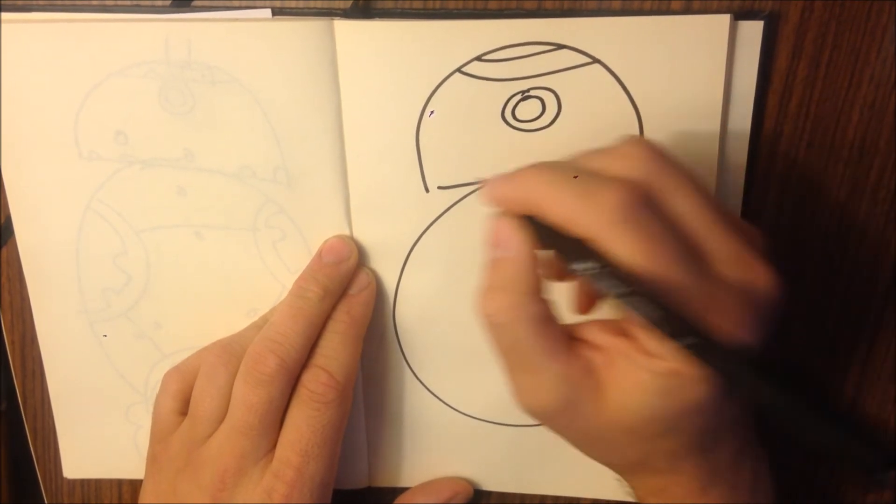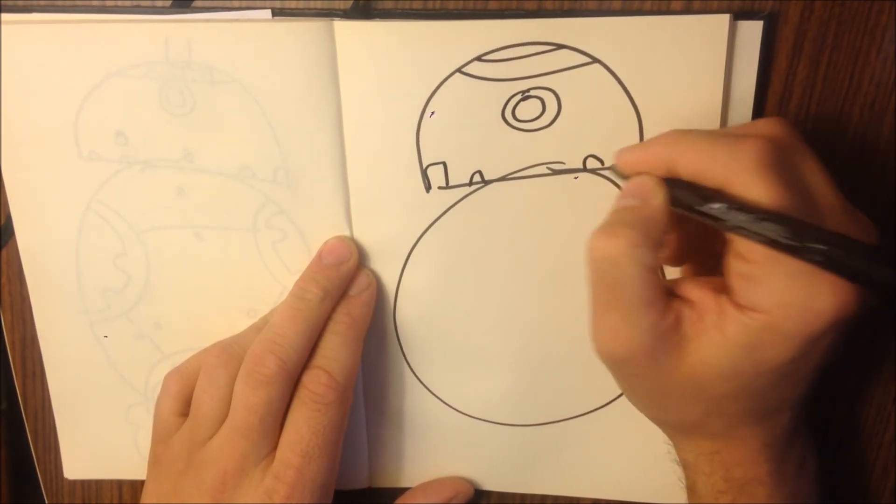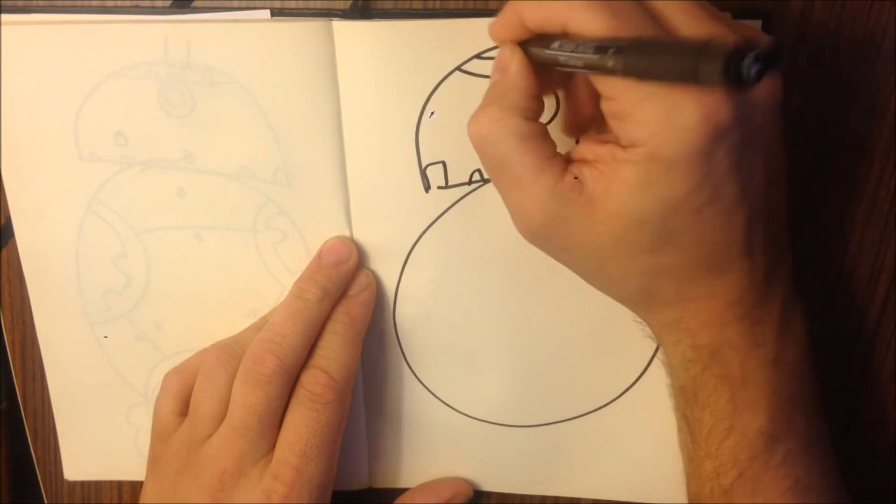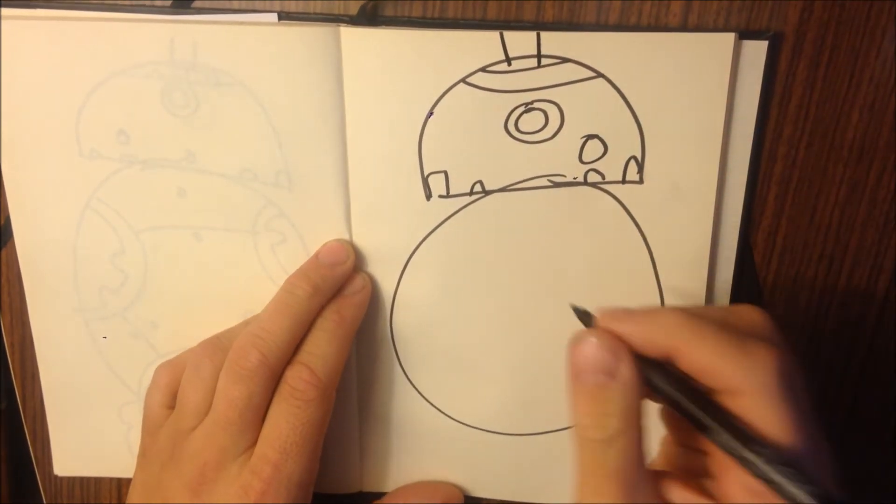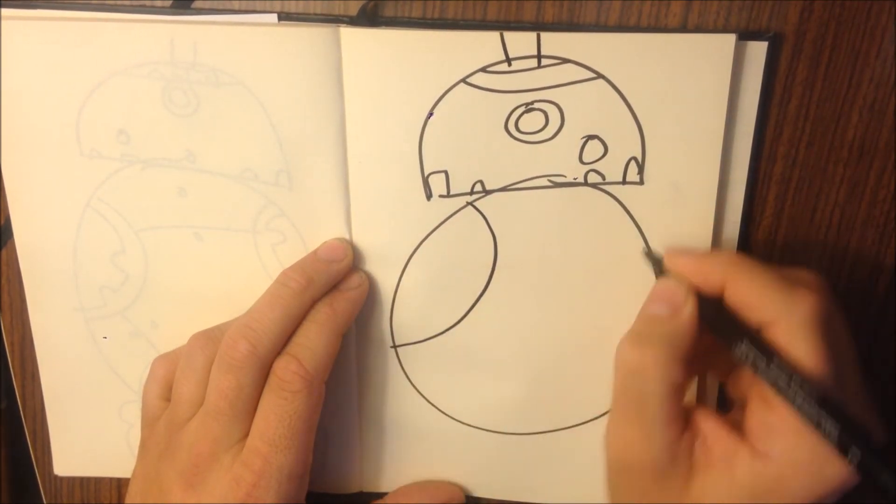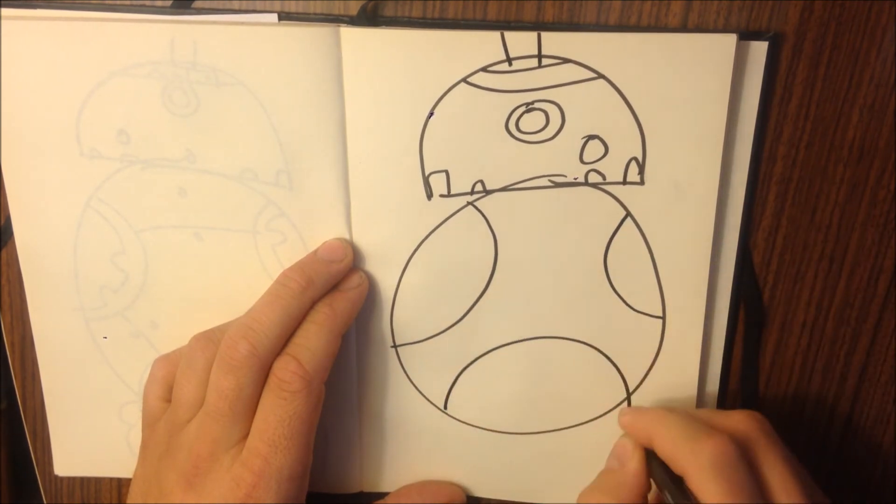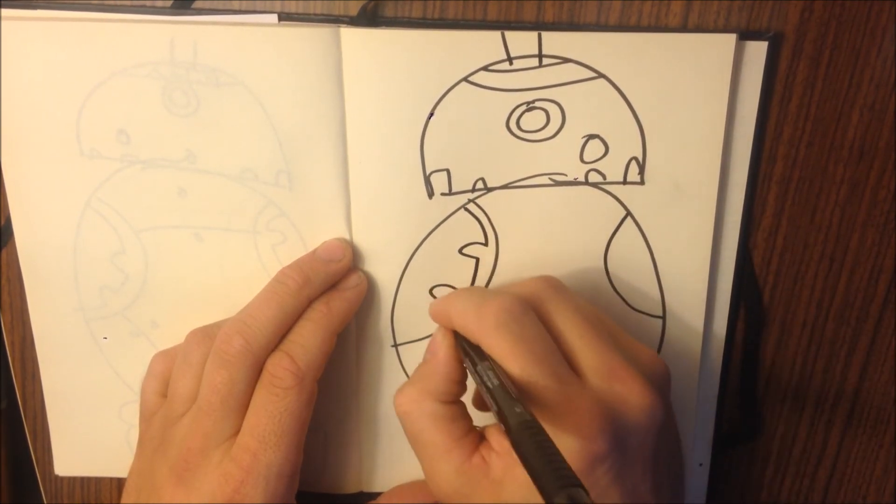We've got his eye, little squares, second eye, antenna. Circle, circle, circle, circle, circle with some bits on.